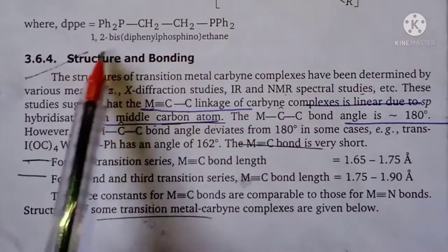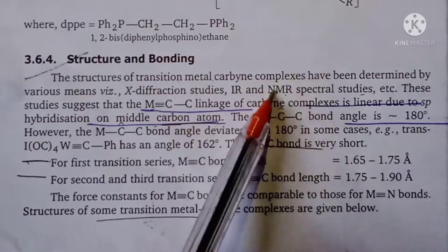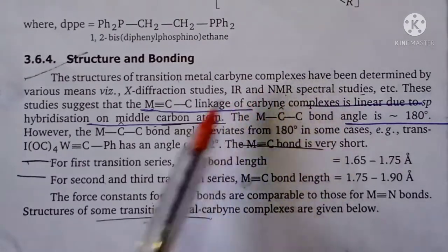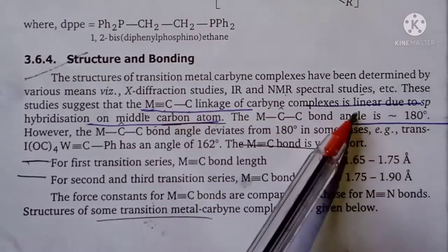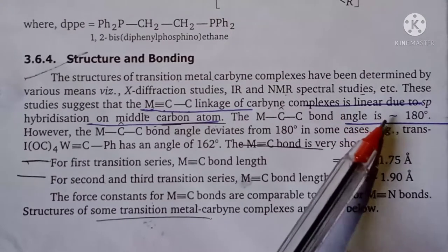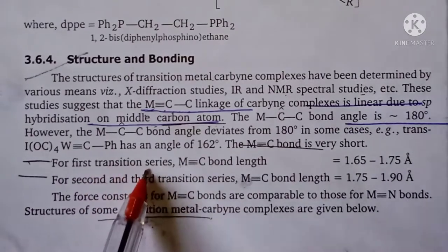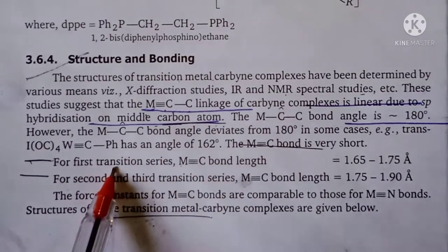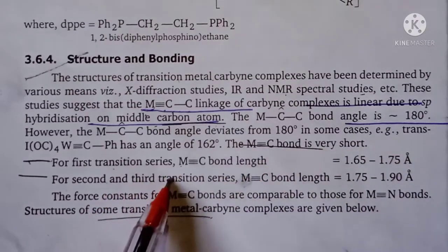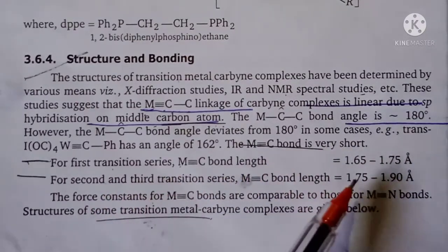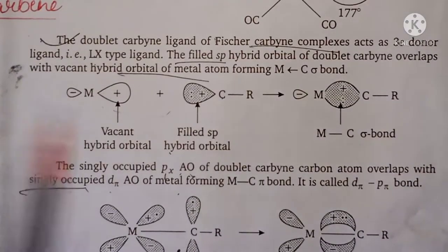Next we will see structure and bonding. The carbyne complex structure is studied by X-ray diffraction, IR, and NMR spectral studies. We know the metal forms a triple bond with the carbon, linking linearly — so it will be a 180-degree bond angle. If the metal is a first series transition metal, the bond length will be approximately 1.65 to 1.75 angstroms, and for a second series member it is 1.75 to 1.90 angstroms.